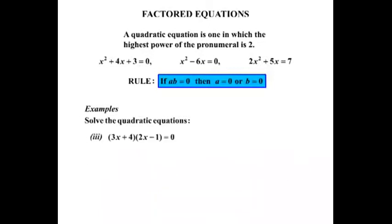The third example, 3x plus 4 times 2x minus 1 equals 0. Let's solve that. Again, first factor, let that equal to 0. Set the second factor equal to 0 as well.